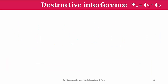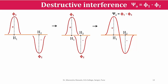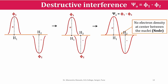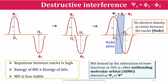In destructive interference, the two wave functions phi1 and phi2 combine such that opposite signs come together and psi = phi1 − phi2. In the central region between the two nuclei there is no electron density, and this point is called the node. The plane which passes through the node is called the nodal plane. As there is no electron density between the two nuclei, the repulsion between the nuclei increases, and the molecular orbital formed has an energy greater than that of the atomic orbitals — it is less stable. Such a molecular orbital formed by the subtraction of wave functions is called the antibonding molecular orbital (ABMO), denoted as psiA or psi star.